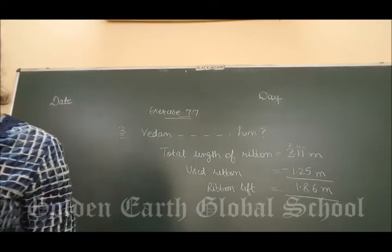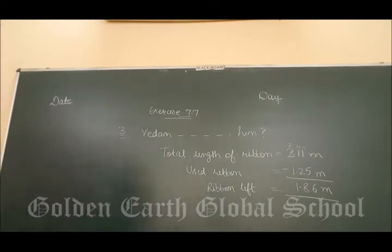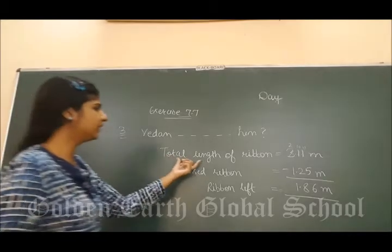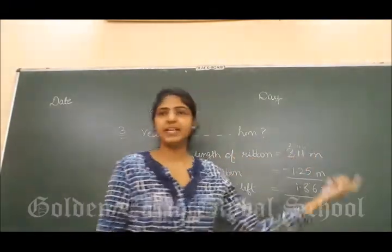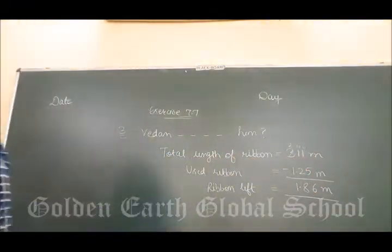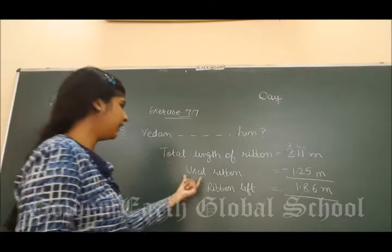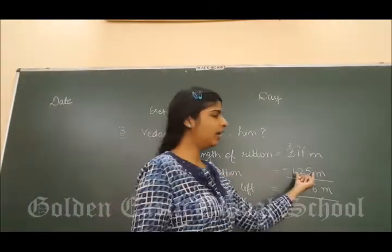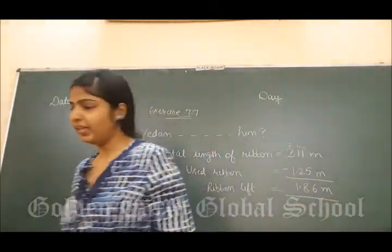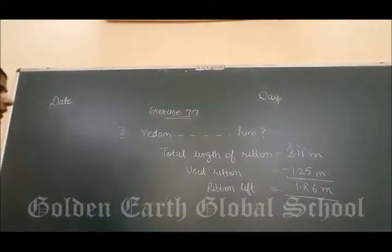Now, third question is: Veden had a 3.11 litre long ribbon. If he used 1.25 litre to tie around a bunch of flowers, how much ribbon is left with you? Left means subtraction. Mere paas total ribbon itna tha, aur use kitna kar liya? 1.25 litre.